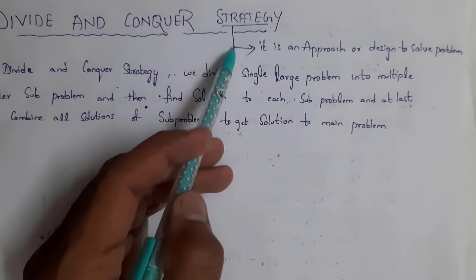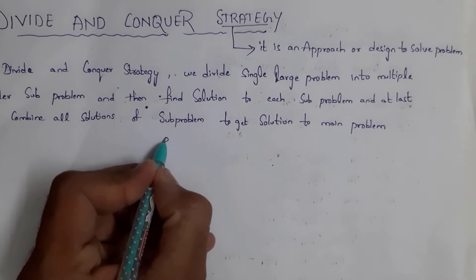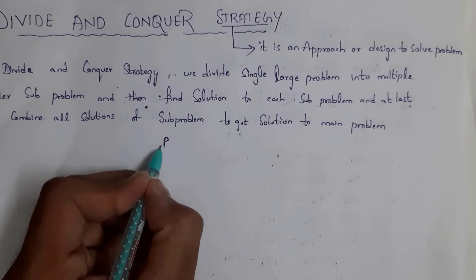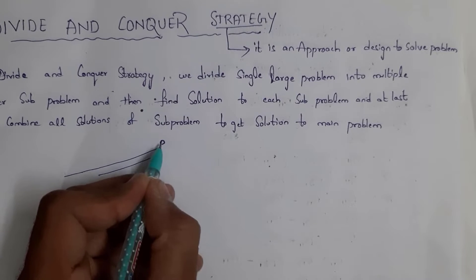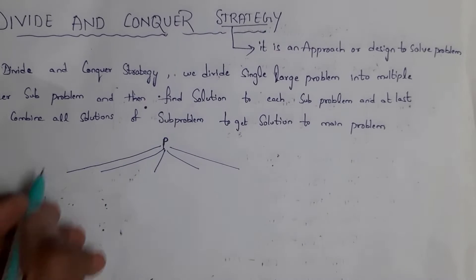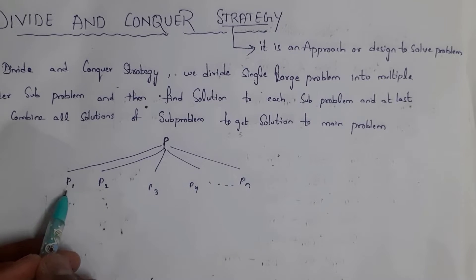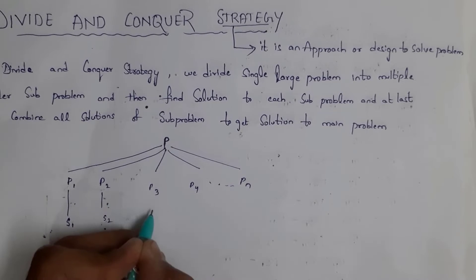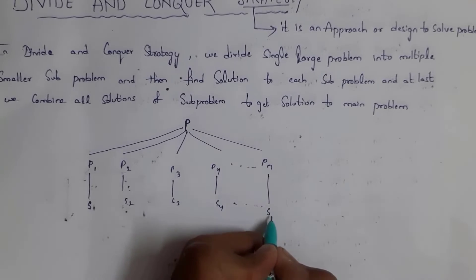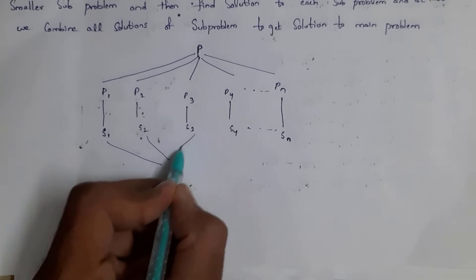Next topic is divide and conquer strategy. The meaning of strategy is nothing but an approach or design to solve a particular problem. For example, if there is a large problem, in divide and conquer strategy we break down this problem into multiple sub-problems — P1, P2, P3, P4, and Pn. We then find the solution to each sub-problem, getting solution 1, solution 2, solution 3, and so on up to solution n, and at last we combine all these solutions.